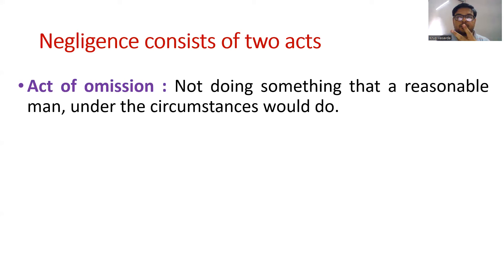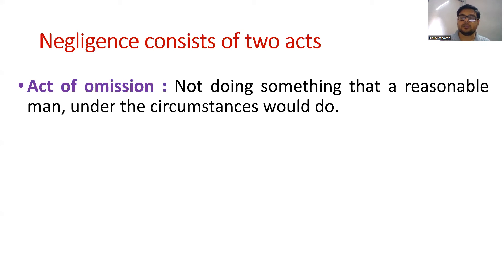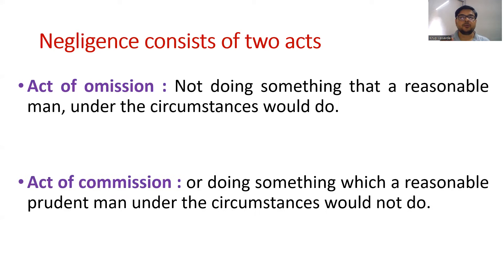Negligence consists of two different acts. First one is act of omission — not doing something that a reasonable man under the circumstances would do. Act of commission is more dangerous, because it involves doing something which a reasonable prudent man under the circumstances would not do. That is act of commission.